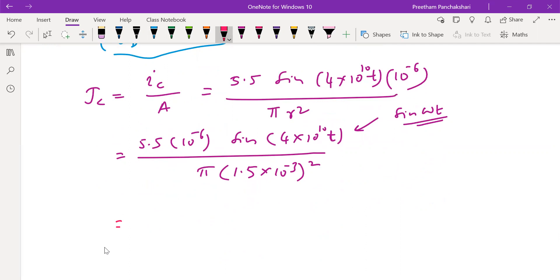So we can simplify this one using calculator. We can find this value as 0.778 sin(4×10^10 t) ampere.